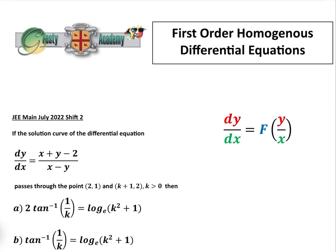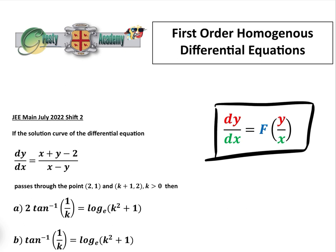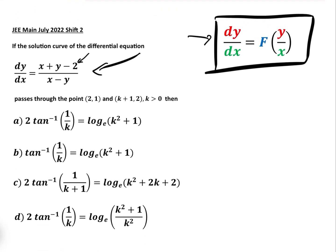In a recent Gresti Academy YouTube video we discussed first-order homogeneous differential equations of the form dy/dx equals f of y over x. Now we're going to look at a differential equation that is almost homogeneous. This one is not quite homogeneous because of a constant term, so at the moment we cannot get it in the form f(y/x), but with a substitution we will be able to.